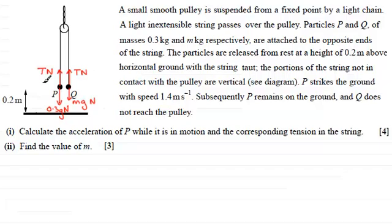Next I want to mark on the accelerations of the particles. We're told that P moves down - P strikes the ground with speed of 1.4 meters per second. Because it started from rest, it's changed its speed, so it's going to have an acceleration a. Because the string is inextensible, Q will move up with exactly the same acceleration.